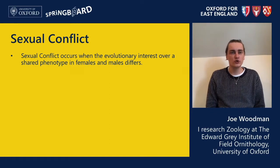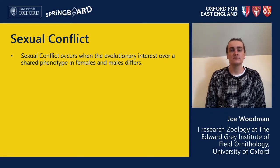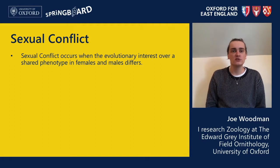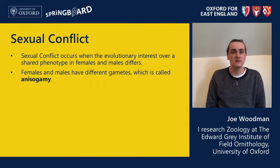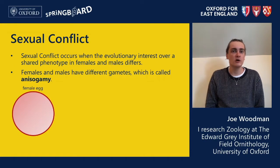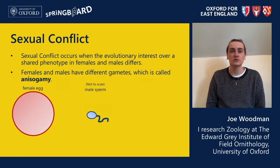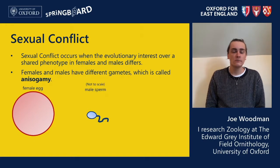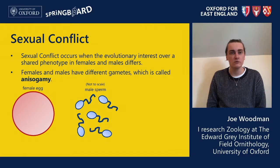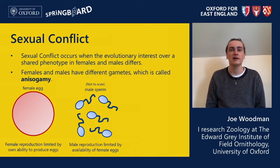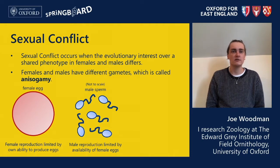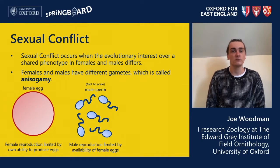Sexual conflict occurs when the evolutionary interests of males and females differ, and it's particularly widespread because of differences in the fundamental biology of the two sexes. Male and female animals differ in their sex gametes — this is called anisogamy. Females produce large and mostly immobile gametes called eggs, while males produce much smaller and mobile gametes called sperm. Because of this size difference, males can produce many more sperm cells than females can eggs, which causes a difference in reproductive ability. Males can theoretically reproduce much more but are limited by the availability of eggs, while females are limited by their own ability to produce eggs.